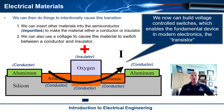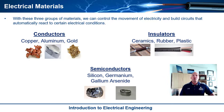Just to review: with these three groups of materials — conductors, insulators, and semiconductors — we can build all of the electronics, computers, and electrical devices that we have on planet Earth. That is a summary of electrical materials. See ya!